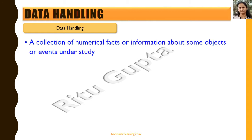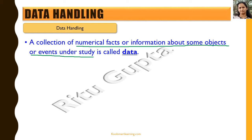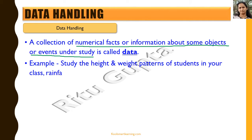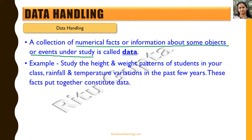A collection of numerical facts or information about some objects or events under study is called data. Whatever objects or events we want to study, a collection of numerical facts or information regarding that is called data. For example, if we want to study the height and weight pattern of students in your class.